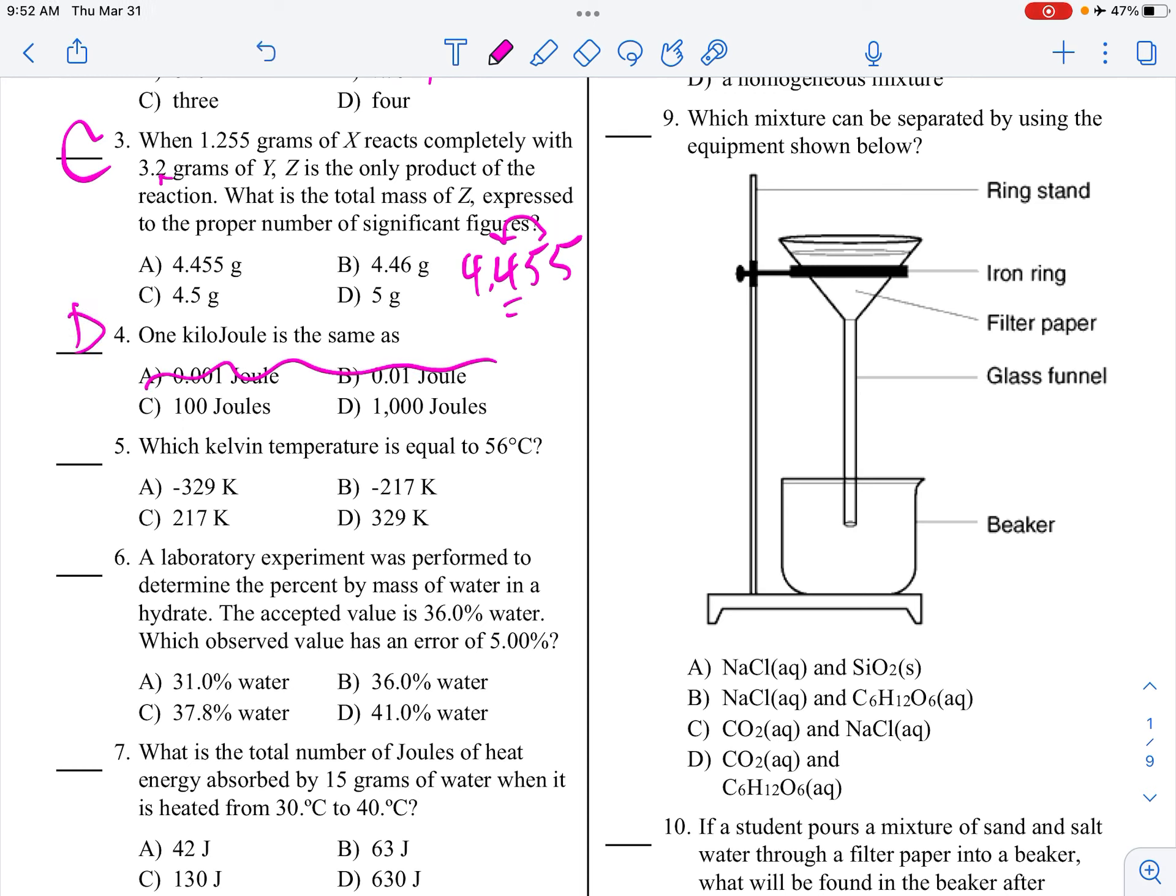Which kelvin temperature is equal to 56 degrees Celsius? We just did that. Add 273 and you get 329 kelvin, positive 329.